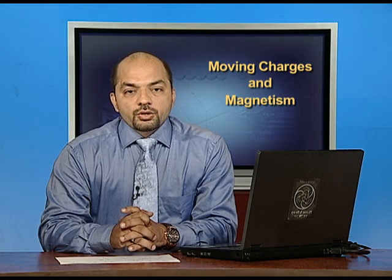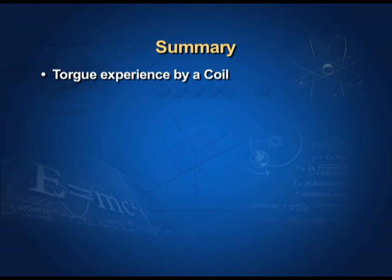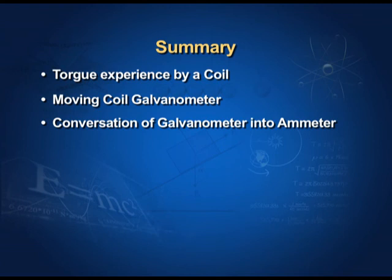Today in this session, we studied the torque experienced by a coil, the moving coil galvanometer, how to convert it into an ammeter and voltmeter, and solved two numericals. In the next session, we will study the magnetic properties of substances: diamagnetic, paramagnetic, and ferromagnetic substances, as well as hysteresis and the application of the hysteresis loop.